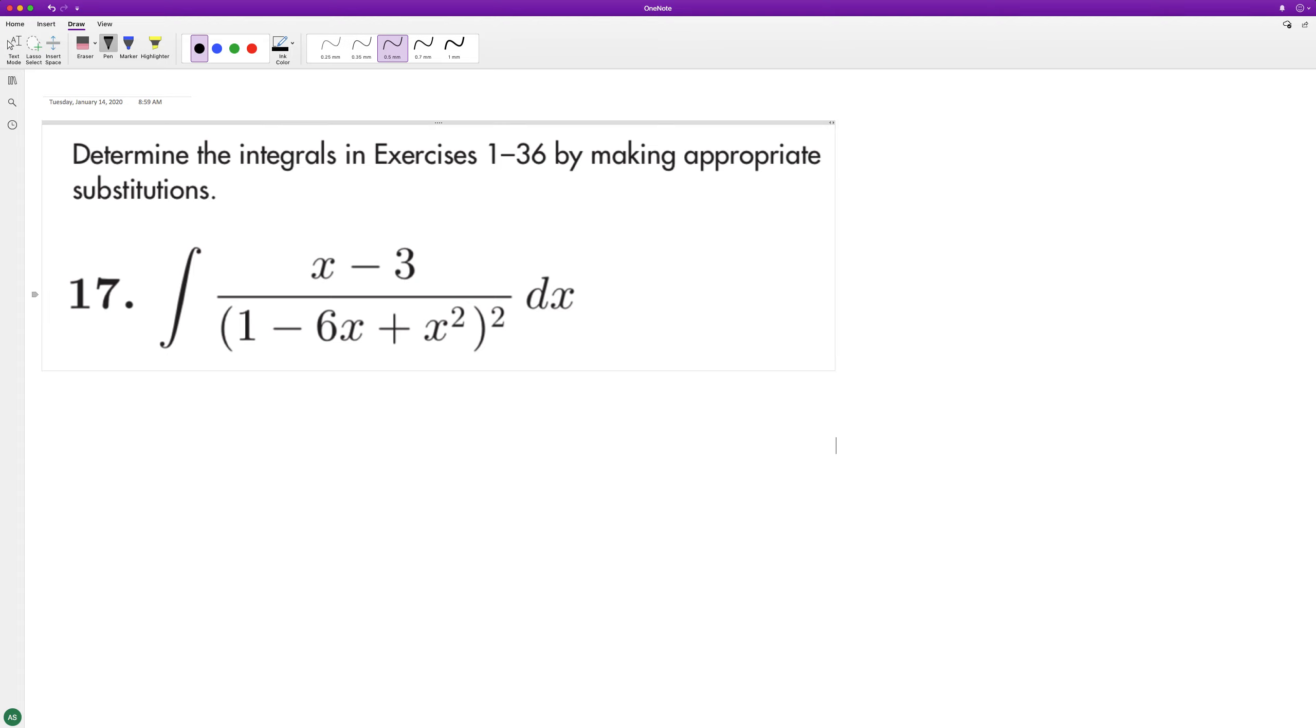For the following problem, we'll use u-substitution in this case. So we'll set u equal to what's inside the parentheses there, so 1 minus 6x plus x squared.